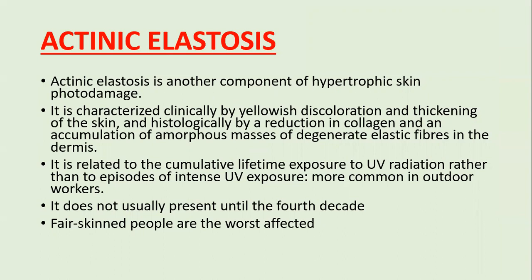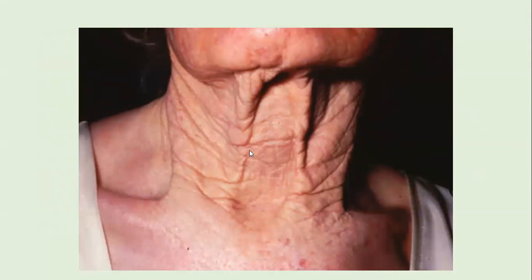Actinic elastosis is a component of hypertrophic skin photo damage, characterized by yellow discoloration and thickening of the skin. Histologically, there is reduction in collagen and accumulation of amorphous masses of degenerated elastic fibers in the dermis. It results from cumulative lifetime UV radiation exposure rather than episodic intense exposure, is more commonly seen in outdoor workers, does not present until the fourth decade of life, and is more severe in fair-skinned individuals.